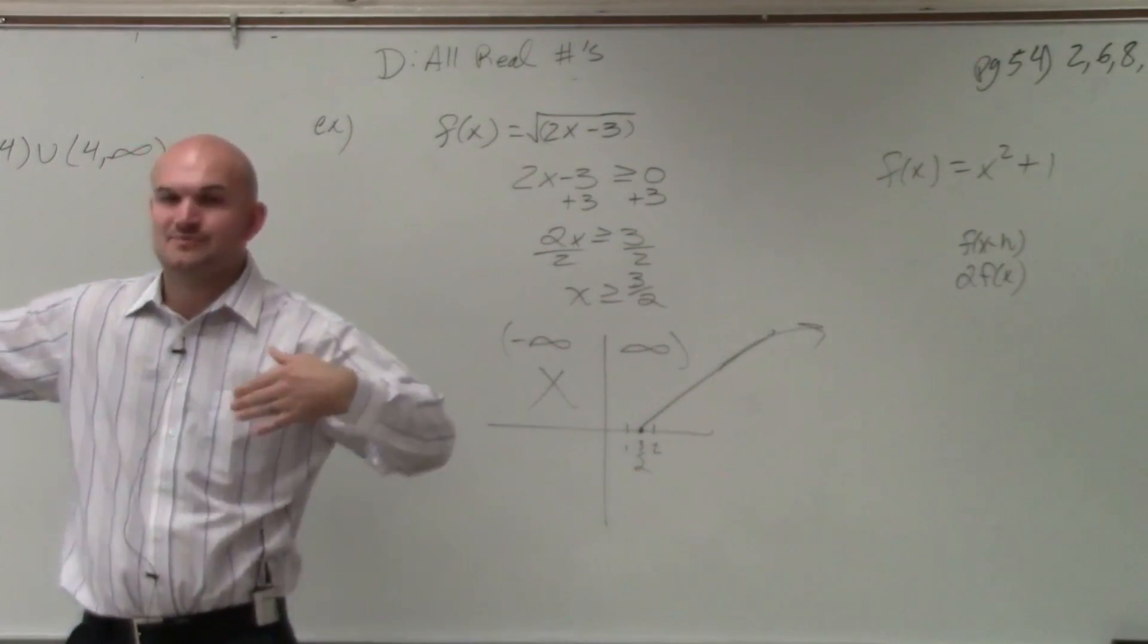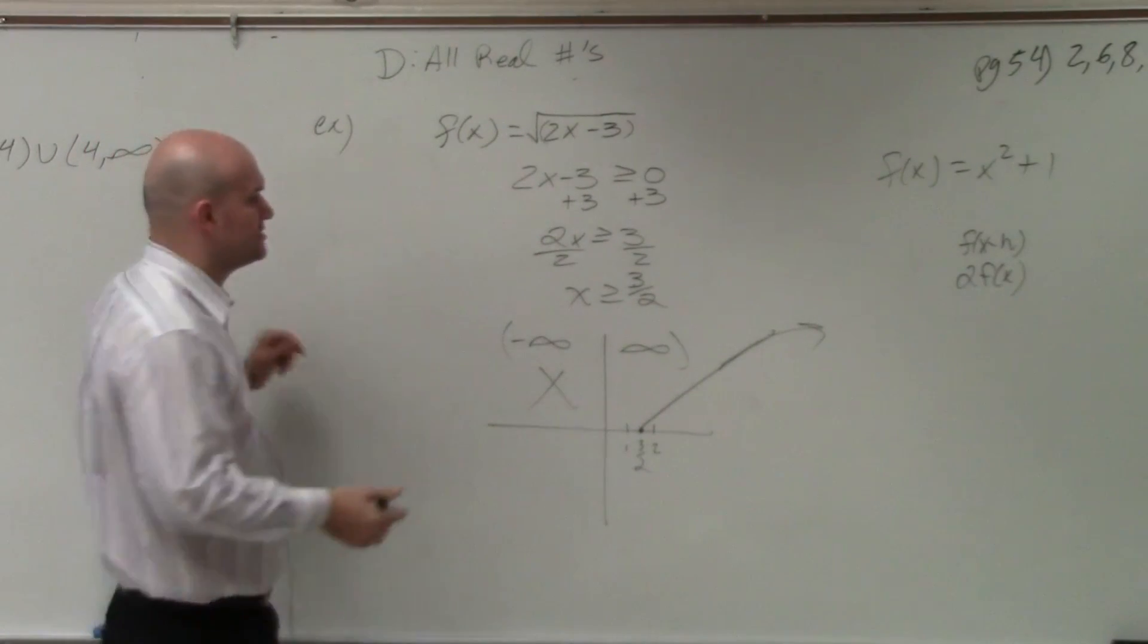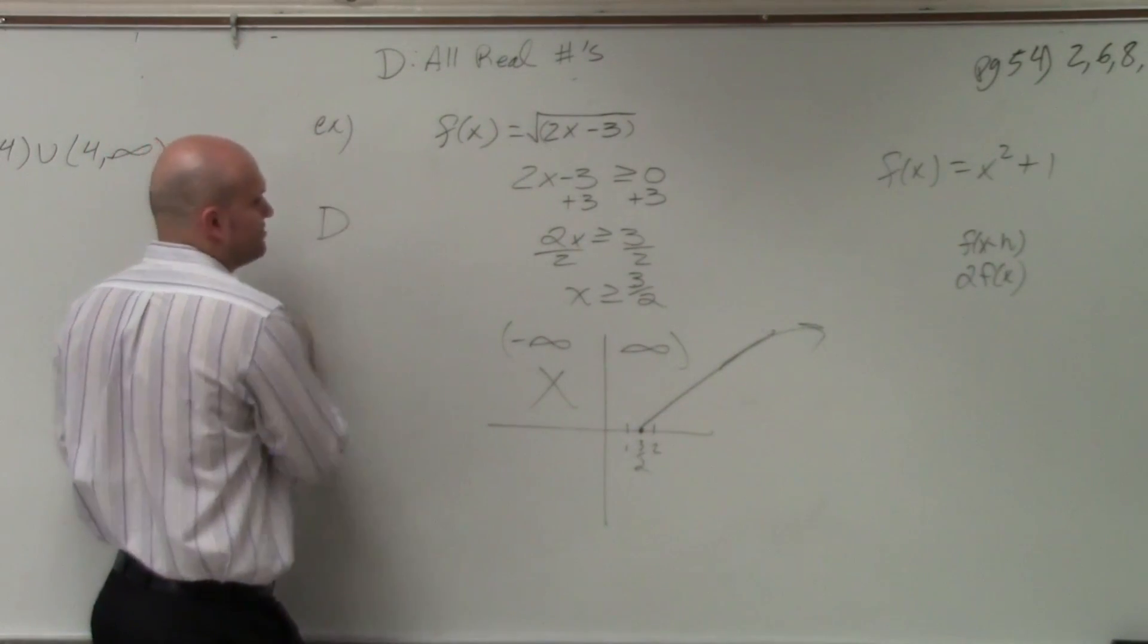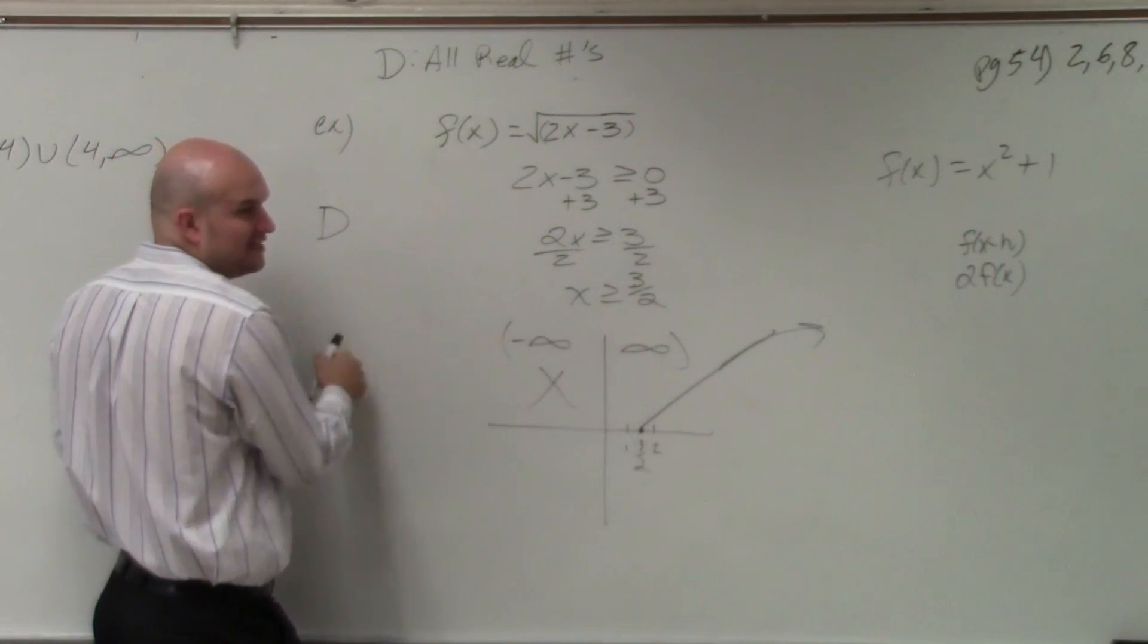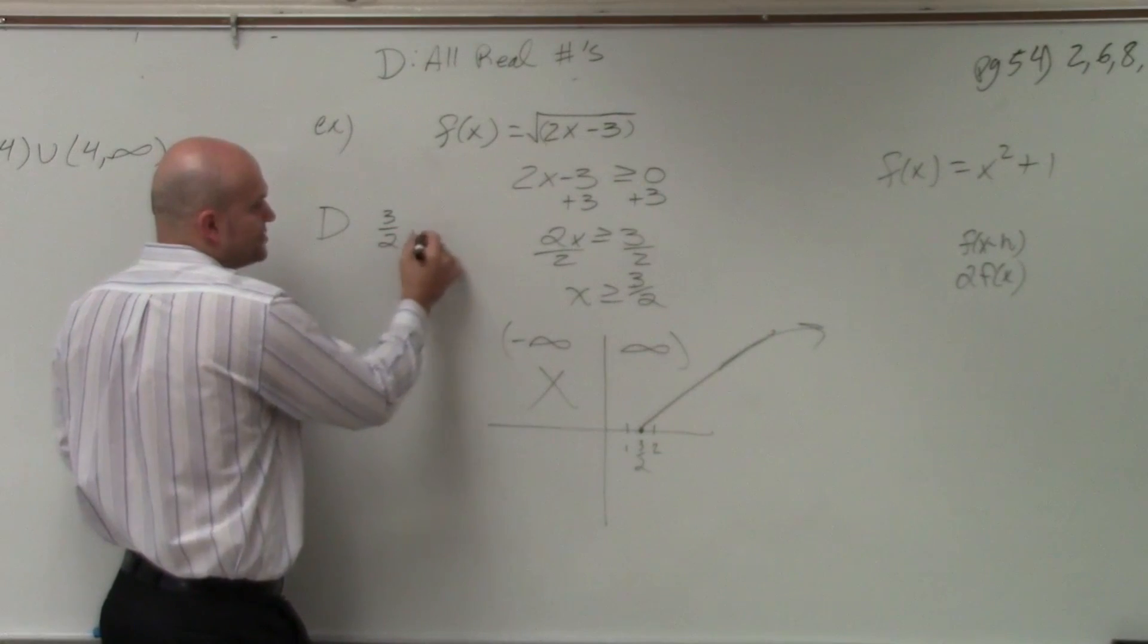It's only saying it has to be 3 halves or equal to. The difference in the last one, we were just finding the values that weren't in that made the denominator equal to 0, that weren't part of our domain. So the way to write our domain is instead of going from negative infinity to infinity, we're going to go from 3 halves to infinity.